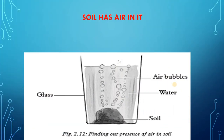Soil has air in it — how can you prove that? Take some dry soil in a glass or beaker. Then add some water in the glass and stir the soil and water with a glass rod for a while. Instantly, you will find air bubbles coming out from the soil. These bubbles are of the air which was present inside the spaces between the soil particles. When you stir the soil with water, the water enters the spaces between the soil particles and expels the air present there. This expelled air is seen in the form of bubbles coming out of the soil. This activity shows that soil contains air.